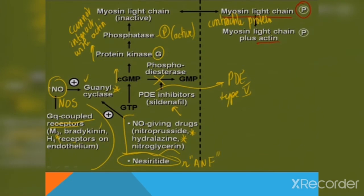In the previous slide, we left our discussion at the point that nitroglycerin stimulates guanylyl cyclase enzyme, which in turn catalyzes the conversion of GTP into cyclic GMP. Increased levels of cyclic GMP stimulate protein kinase G. Protein kinase G in turn phosphorylates phosphatase enzyme and makes it active, which in turn dephosphorylates myosin light chain — which is basically a contractile protein — preventing its interaction with actin and in turn promoting relaxation.